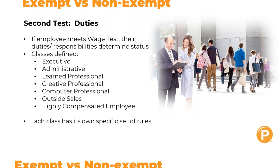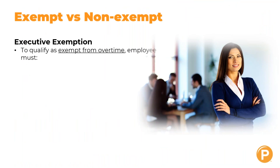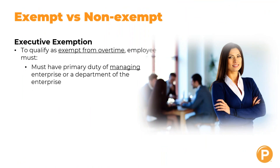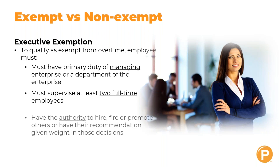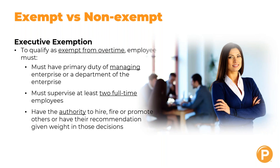For the executive exemption, to qualify as exempt from overtime, the employee must: first, have a primary duty of managing an enterprise or a department; second, supervise at least two full-time employees; and third, have the authority to hire, fire, or promote — or have their recommendation given significant weight in those decisions. All three of these criteria must be met together.